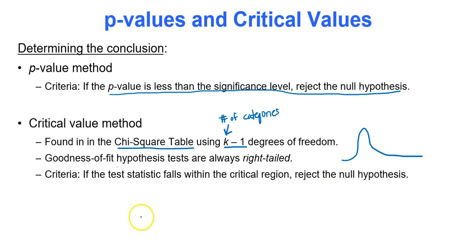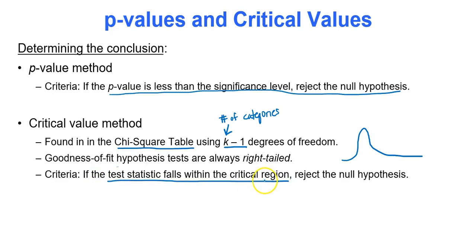For the critical value method, if the test statistic falls within the critical region — the region separated by the critical value — we reject the null hypothesis. We will pretty much resort to the p-value method.